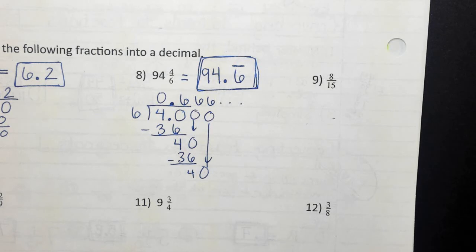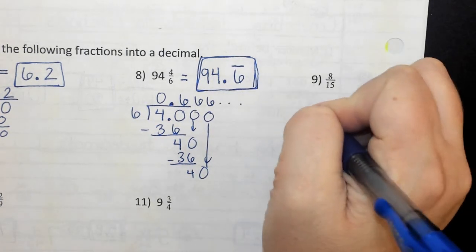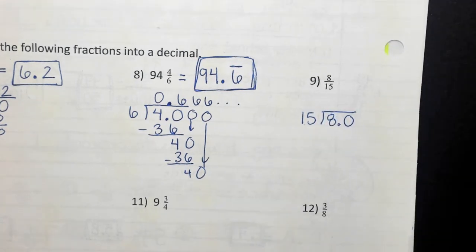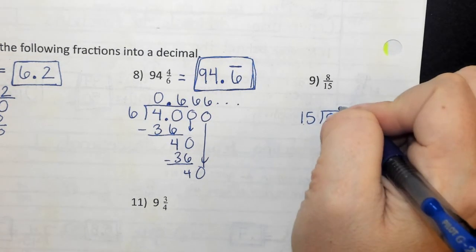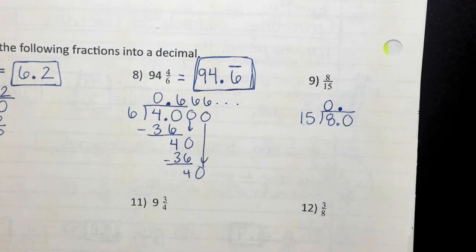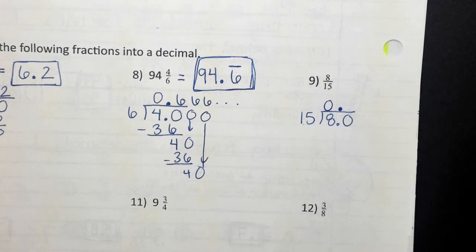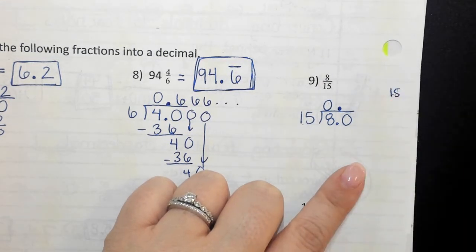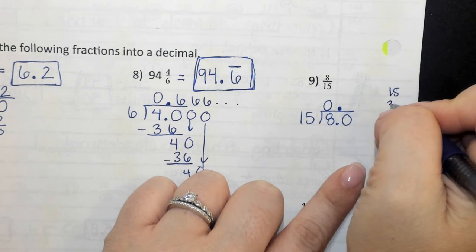Number nine — what is going to go at the door? Fifteen. And in the house? Eight. Let's go ahead and add our decimal and a zero. Bring it to the top. Fifteen will go into eight zero times. Fifteen will go into eighty — if it's a big number like fifteen, you can go to the side and do: fifteen times one is fifteen, fifteen times two is thirty, fifteen times three is forty-five.